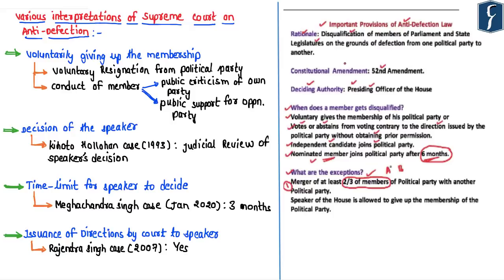The Constitution is silent on some important provisions — for instance, it does not specify whether there is a time limit for the Speaker to decide on anti-defection, what 'voluntarily giving up membership' means, or whether courts can issue directions to the Speaker. To bring clarity and ensure effective implementation, the Supreme Court has given interpretations on these provisions. The anti-defection law says a member who voluntarily gives up membership shall be disqualified, but the Constitution is silent on what 'voluntarily giving up' means.